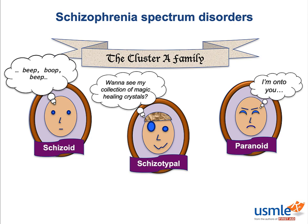Some schizotypals couldn't care less about interpersonal relationships, but in some of them this actually causes a lot of anxiety and feelings of estrangement. It falls just short of the marked disturbances in experiencing reality that buy you the diagnosis of schizophrenia. On Step 1, the most you're going to be asked to do is identify them. The key thing to remember is that while they do share a genetic association with schizophrenia, they're not actually true psychotic disorders and are not characterized by hallucinations or delusions.